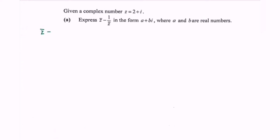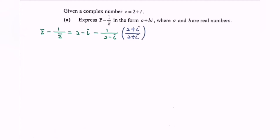Conjugate of z minus 1 over conjugate of z equals 2 minus i minus 1 over 2 minus i. My suggestion is to multiply by the conjugate, which is 2 plus i, in order to rationalize the denominator. So we have 2 minus i minus the bracket 2 plus i, over the denominator where we apply the formula a squared plus b squared, giving us 4 plus 1.